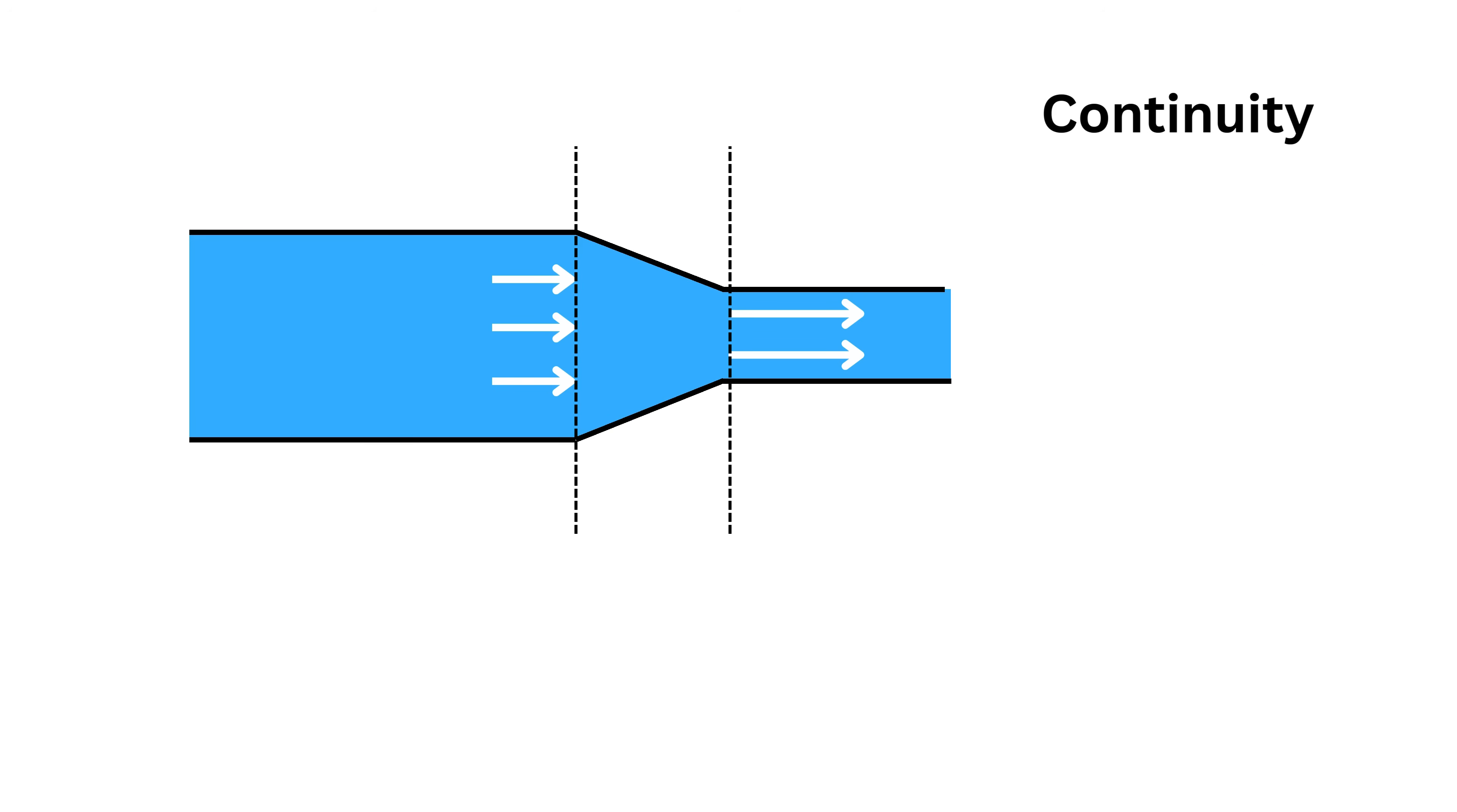If we assume the fluid has the same density everywhere, which is true for most liquids like water, then the mass flow rate is just the cross-sectional area of the pipe multiplied by the velocity of the fluid.